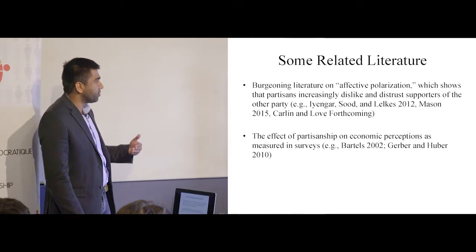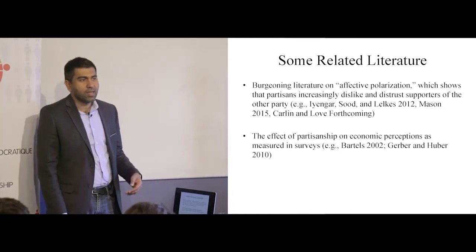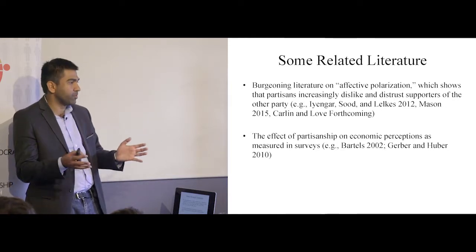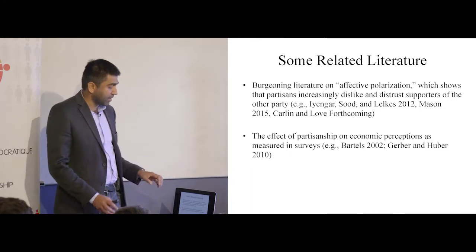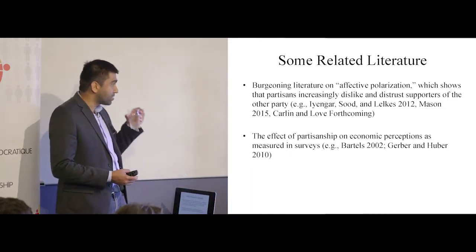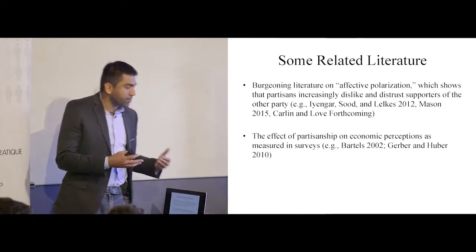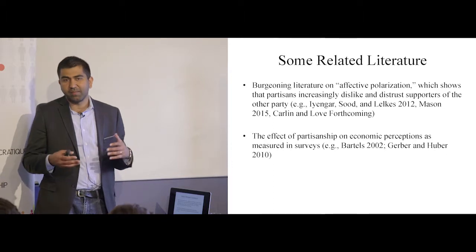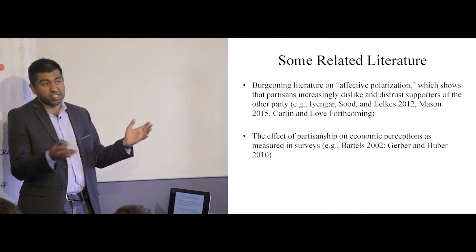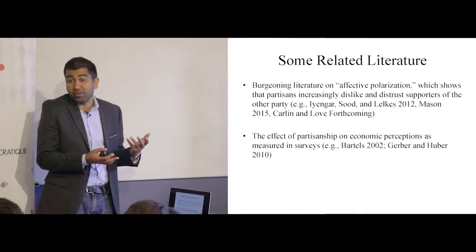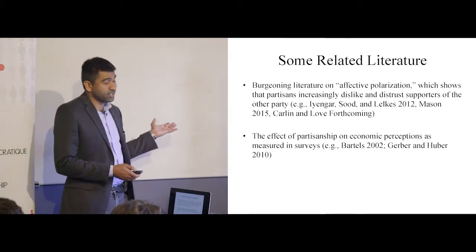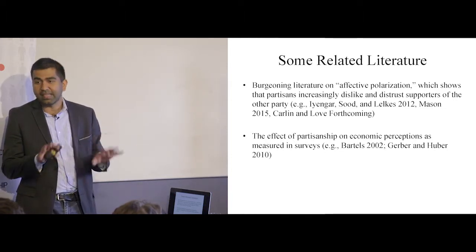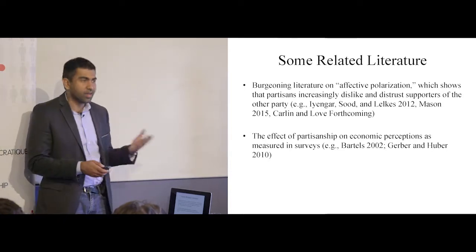Iyengar basically said what we're really talking about is not necessarily gradations on issues—most people don't have very strong issue positions anyway. But really what's going on is that people are increasingly disliking and distrusting supporters of the other party. I think this literature's main limitation is that most of everything going on in these papers is in the context of a survey. We want to understand the scope conditions—do these results extend beyond the survey context?